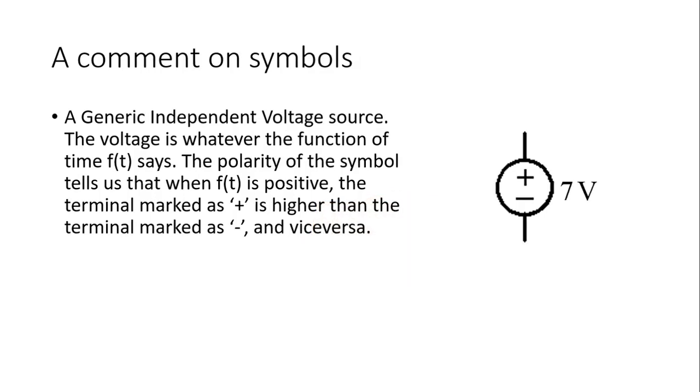In 201, of course, we had only DC sources, so f of t was reduced to a constant value, 7 volts, 10 volts, or 100 volts.